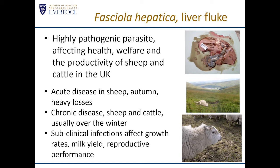In addition to causing chronic clinical disease, Fasciola can also cause production losses through subclinical infections. A lower fluke burden than that required to cause clinical disease can result in quite significant production losses. We typically see growth rates affected — it takes longer for cattle to reach slaughter weight. In dairy cattle it can affect milk yield, with losses of up to 15% reduction in milk yield in high-yielding herds. Subclinical infections can also result in poor reproductive performance.